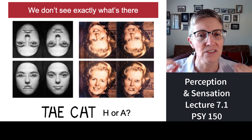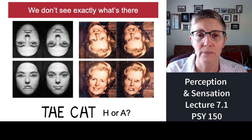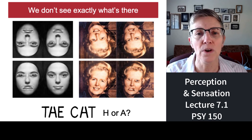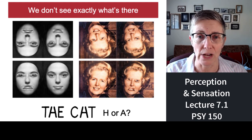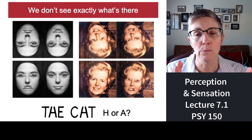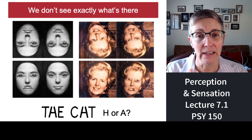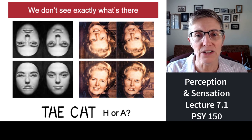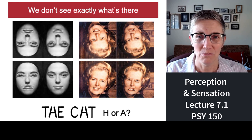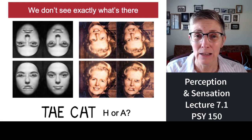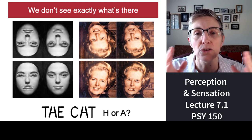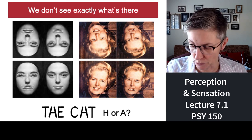In upside-down faces, we're just terrible at perceiving what's there. Context is also important — that's where 'the cat' comes in. The center letter in both words is actually the same shape. When that shape is surrounded by the letters T and E, it looks like an H. When that letter is surrounded by a C and a T, it looks like the letter A. Both aren't exactly accurate, but that's what we see because we use what's around those shapes to interpret them.